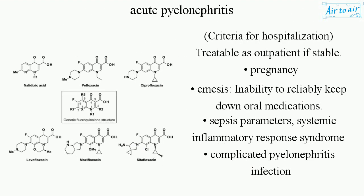Criteria for hospitalization: Treatable as outpatient if stable. Indications for inpatient care include pregnancy, emesis or inability to reliably keep down oral medications, sepsis parameters, systemic inflammatory response syndrome, and complicated pyelonephritis infection.